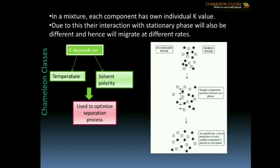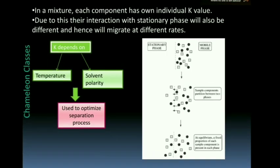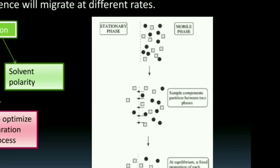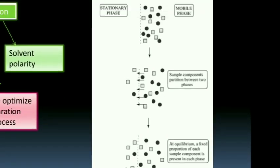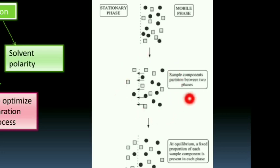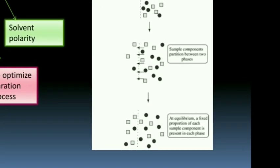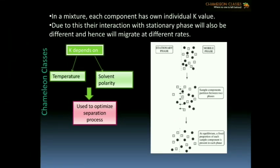Looking at this figure, there are two phases: the stationary phase and the mobile phase. The samples are denoted by circles and squares. As the process proceeds, the sample components are distributed between the stationary phase and the mobile phase. At equilibrium, there are some particles in the stationary phase and some in the mobile phase depending on their affinity. This is the basic principle behind chromatography and the separation of molecules.